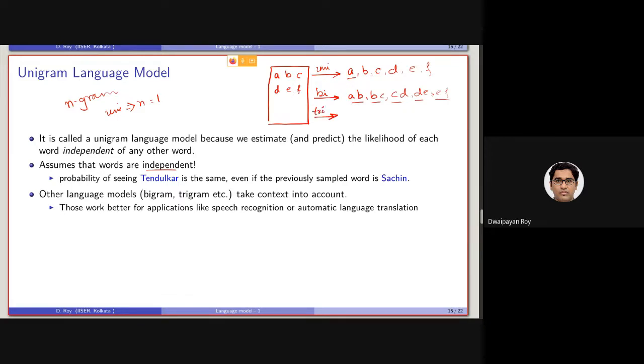For trigram, it is basically three, as I hope you can understand. It will be basically A, B, C, then B, C, D, then C, D, E, and D, E, F. These are the four terms which will be indexed. Basically, these are the four terms which will be considered.